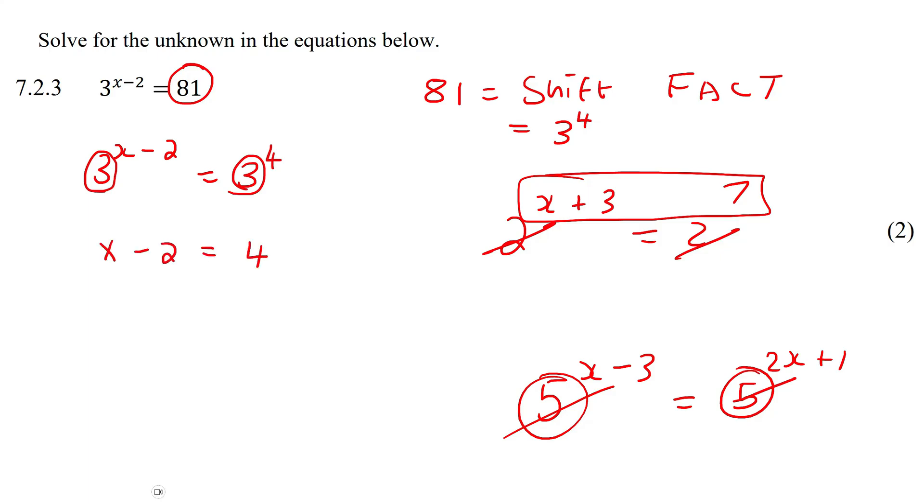Now I just want to get x by itself. To do that, I'm going to take this to the other side where it's going to end up becoming a plus two, because when you take it to the other side, remember, the sign has to change. And so x is going to be four plus two, which is six.